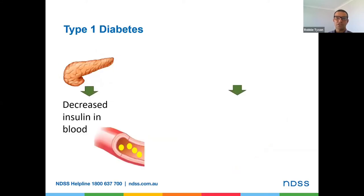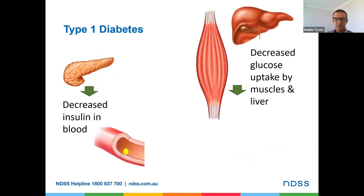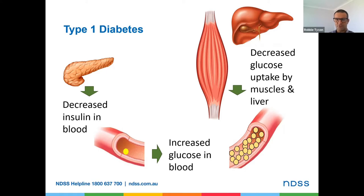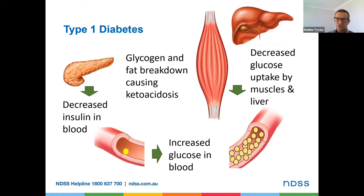In type 1 diabetes, however, there's decreased insulin in the blood because the pancreas is not making any insulin. That leads to decreased glucose uptake by the muscles and liver — the body is in a kind of starvation mode, and the storage of glucose in the liver isn't occurring either because glucose is unable to get into the muscles. The glucose that should be entering cells to be used as energy or stored is remaining in the blood, giving increased blood glucose levels. The stored glycogen starts to be broken down to be used as energy, and fat also rapidly breaks down to provide energy, producing the byproduct of fat metabolism — ketones. These are acidic molecules, and if they build up sufficiently, we end up with ketoacidosis.